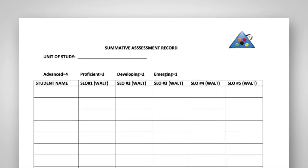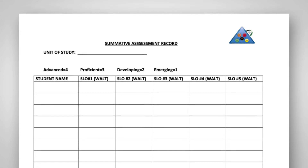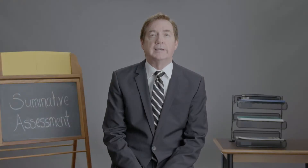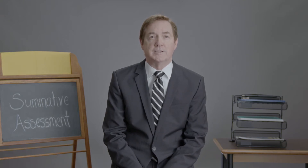One way that the team analyzes student assessment data is through a template that captures student scores in relation to specific student learning objectives. This can also be done electronically using a number of tools, including Excel spreadsheets or Google Sheets. Remember, though, that it's not enough to just discuss and analyze general student scores. The data must be broken down so that teachers can see how each student performed in relation to the specific student learning objectives of the unit.